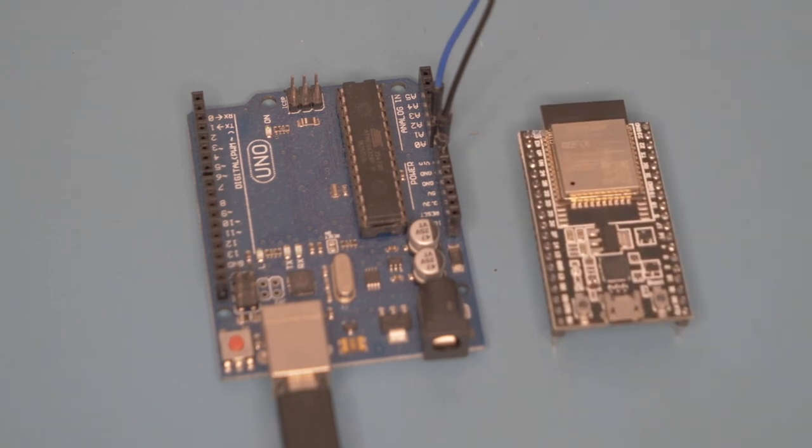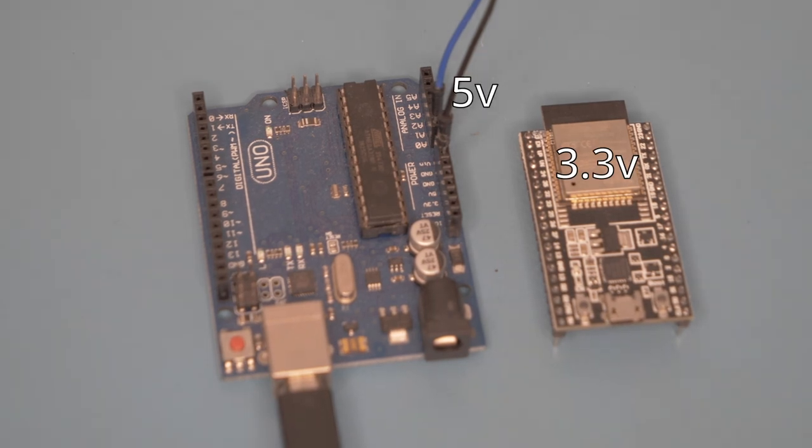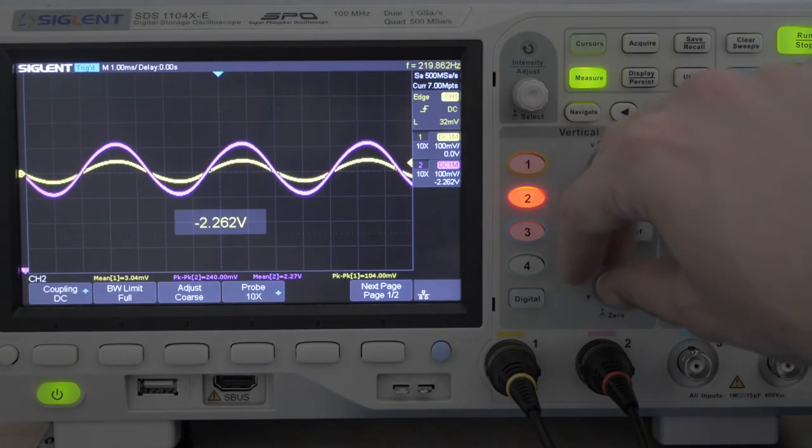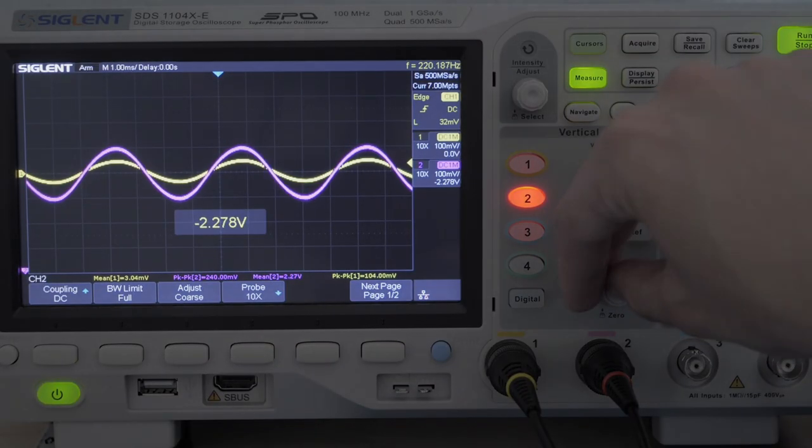Be sure to double check the voltage tolerances of the pins on your microcontroller, so you know how much you need to bias and amplify the signal by in order not to risk damage.